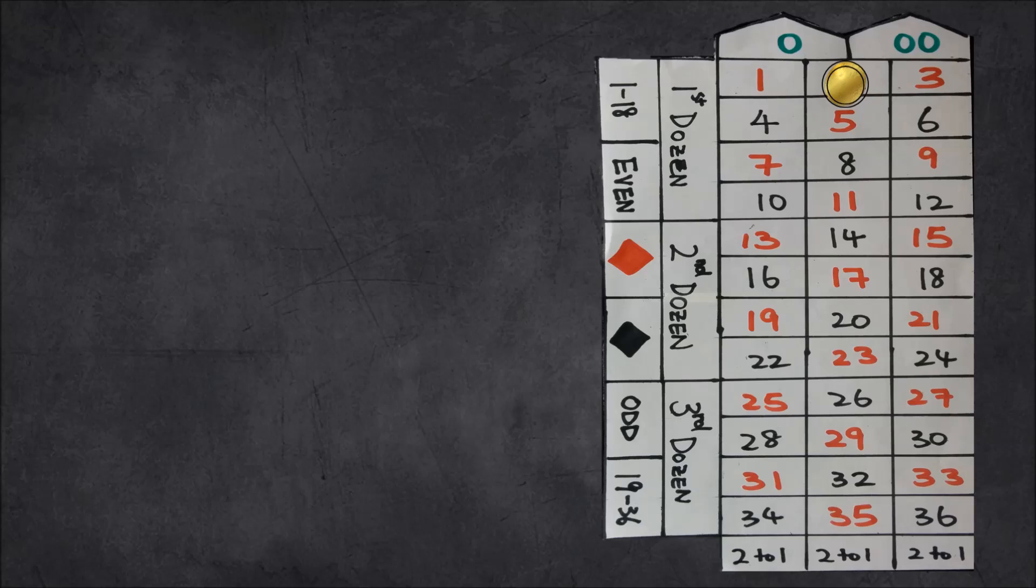It makes sense that the higher risk bets, like betting on a single number, has a higher payout of 35 to 1, whereas the lower risk ones, like black or red, just the colors, has a lower payout of 1 to 1. So is there a way to find out what option is better in the long run?